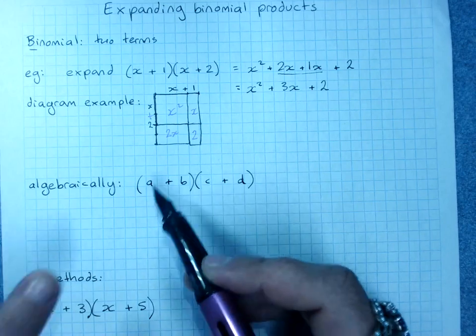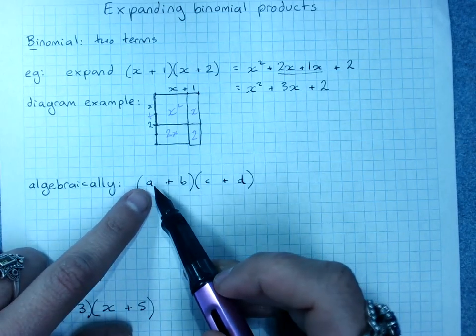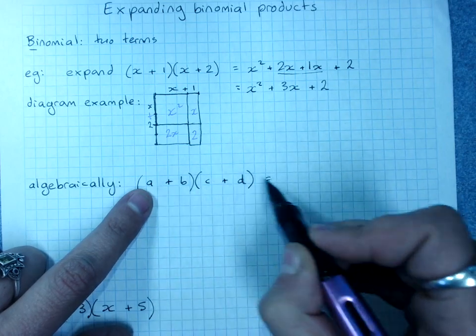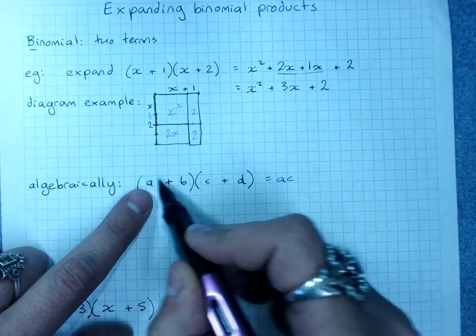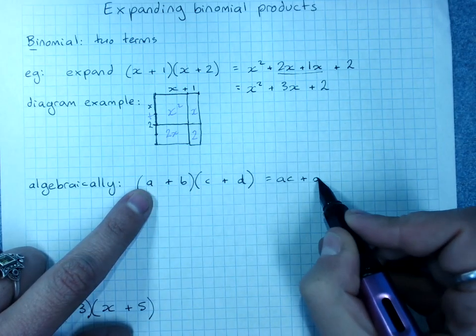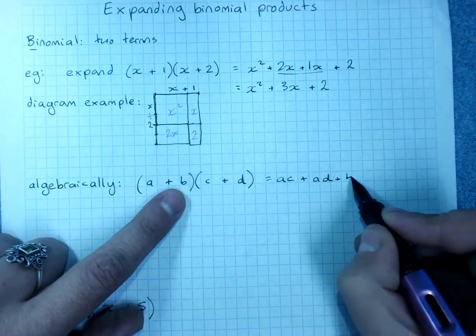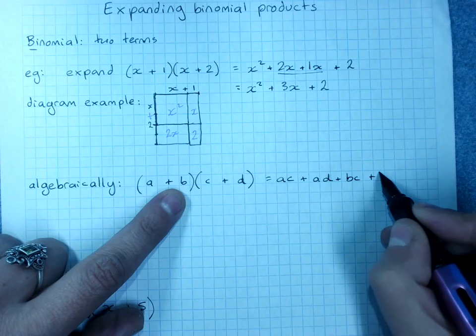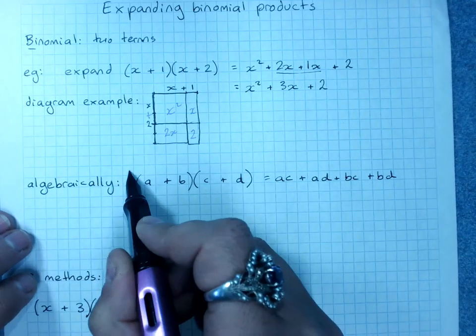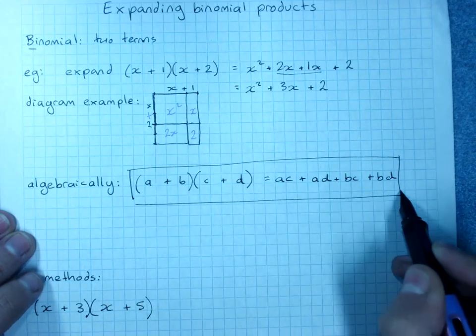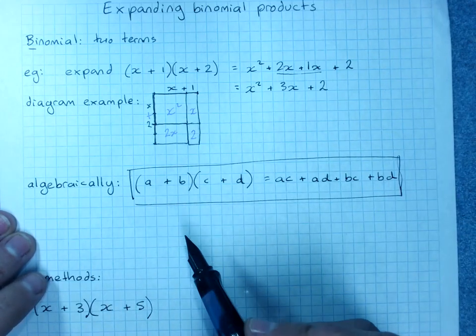the a has to get multiplied by both the c and the d. a times c is ac, a times d is ad, b times c, b times d. So this is an example, or the algebraic representation, of the binomial expansion.